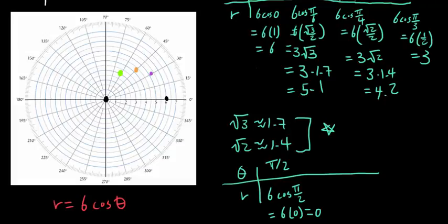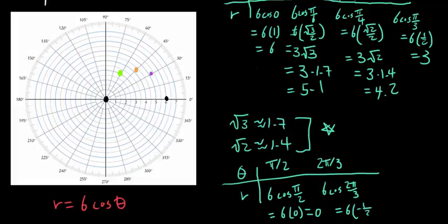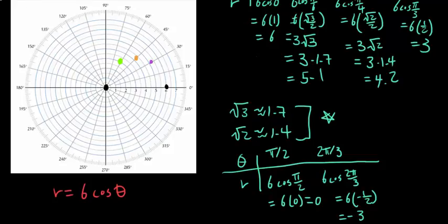Let's try 2 pi over 3, which is 120 degrees. R is going to be 6 times cosine of 2 pi over 3. Cosine of 2 pi over 3 is negative, and it's the same magnitude as cosine of pi over 3, which is 1/2, so it's negative 1/2. That gives r equals negative 3. So when theta is 2 pi over 3 — this line, 120 degrees — you're going to go 3 backwards, so you plot the point right there.